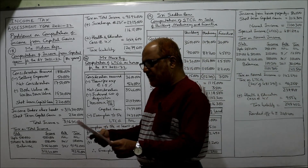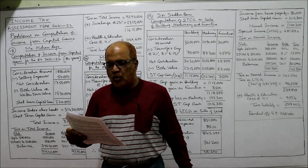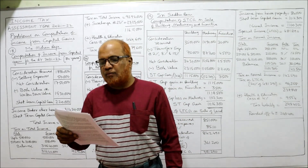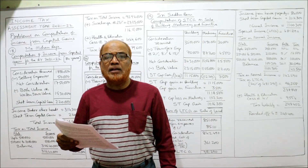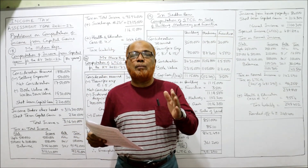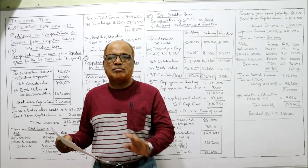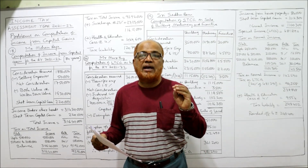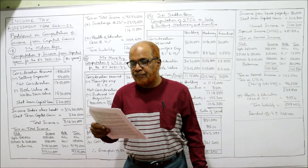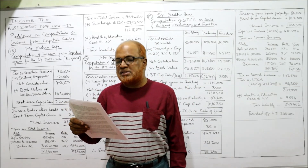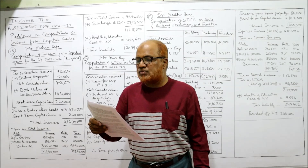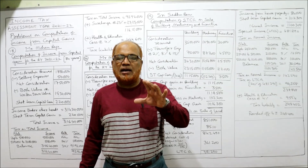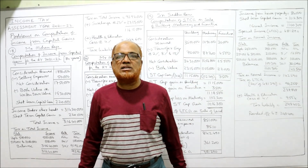Now see the 18th problem. Mr. Mohan Raju, 84 years of age, is owning a building which is used for running his business. First of all, the age is 84 years — that means super senior citizen. 80 plus means super senior citizen. The basic exemption limit of a super senior citizen is 5 lakh rupees. He is owning a building used for running the business. On 1/4/2020, the book value of the building is 15 lakh 30 thousand.